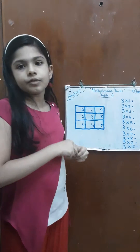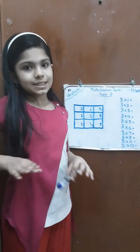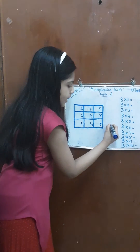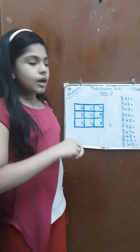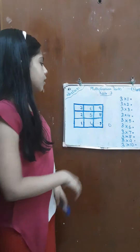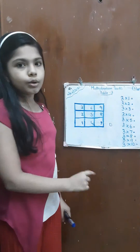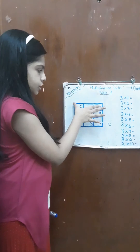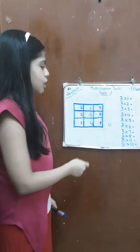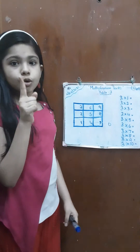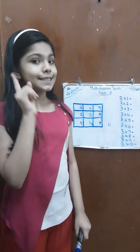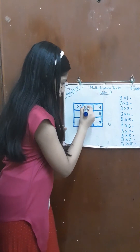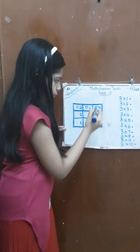Now these numbers are going to be the ones place. Remember to write a 0 beside the grid. Next, let's consider each row — 1, 2 and 3. So this is the first row, second row, third row. On the first row, for the tens place we are going to write 0 — that means 0, 0, 0.